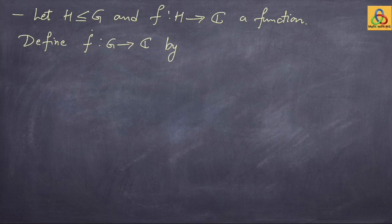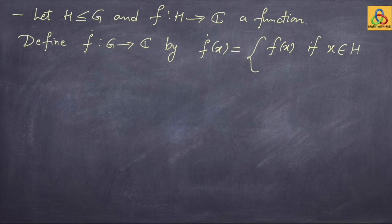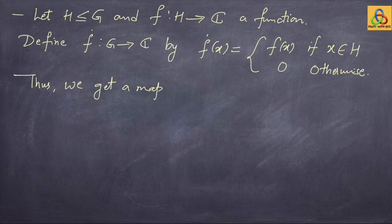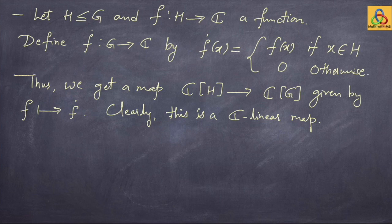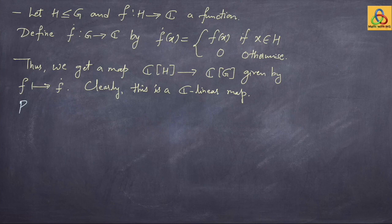Define f-dot from G to C by the rule: f-dot of x equals f(x) if x is in the subgroup H, and 0 otherwise. Thus we get a map from C[H] to C[G] given by f maps to f-dot. This is clearly a C-linear map. This gives something interesting as a proposition.